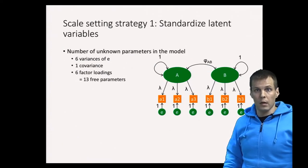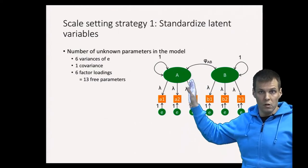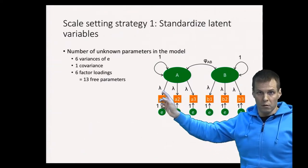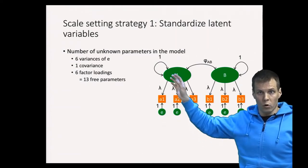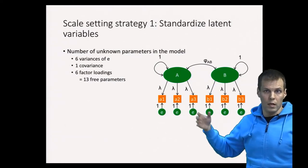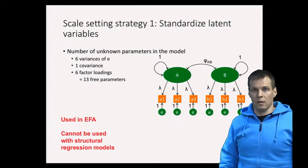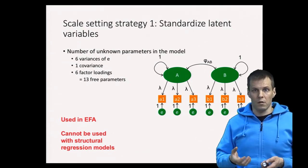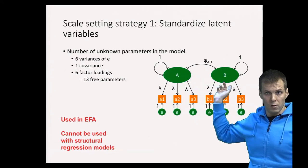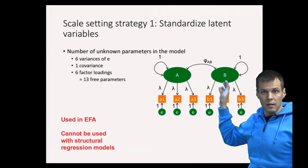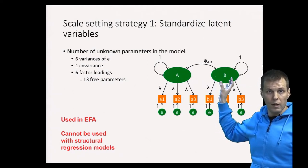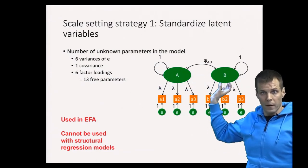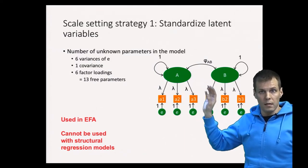In exploratory analysis, we say all factors have variances of 1, producing standardized factor loadings — standard regression coefficients of the indicators on the factors, or correlations in the case of uncorrelated factors. However, we cannot use that approach in structural regression models, which extend factor analysis by allowing regression relationships between factors. The reason is that the variance of an endogenous variable is a sum of contributions from other variables, so we can't fix its variance to 1 if that variance depends on other things in the model.